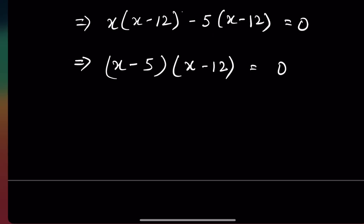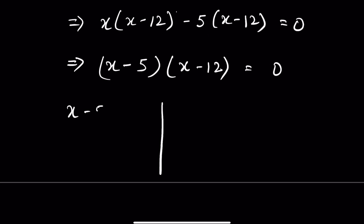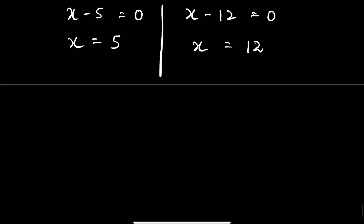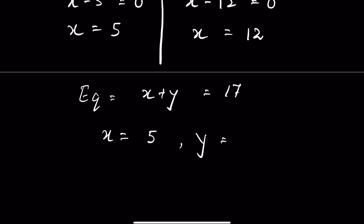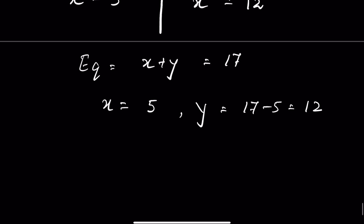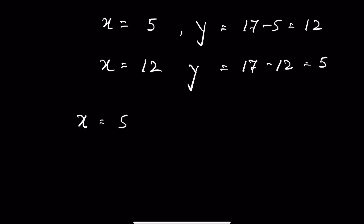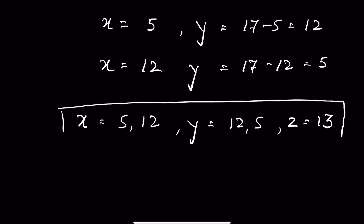We have two solutions: when X minus 5 equals 0, X equals 5; and when X minus 12 equals 0, X equals 12. From equation 3, X plus Y equals 17, so when X equals 12, Y equals 5, and when X equals 5, Y equals 12. And Z is equal to 13.